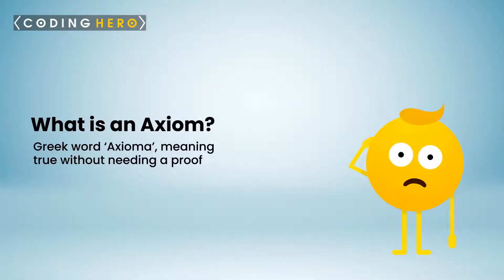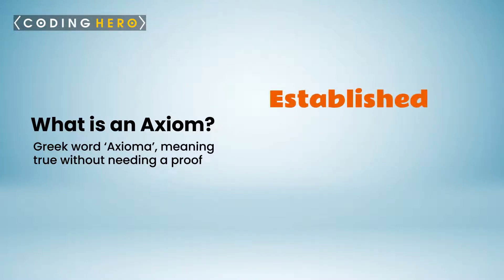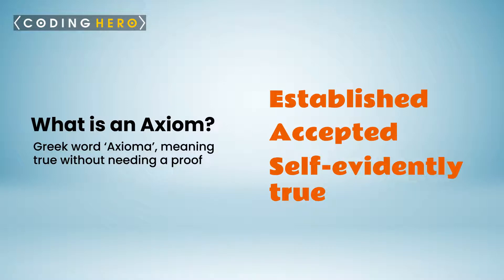What is an axiom? Derived from a Greek word axioma, meaning true without needing a proof, an axiom is a statement or a proposition which is regarded as being established, accepted or self-evidently true, on which an abstractly defined structure is based.